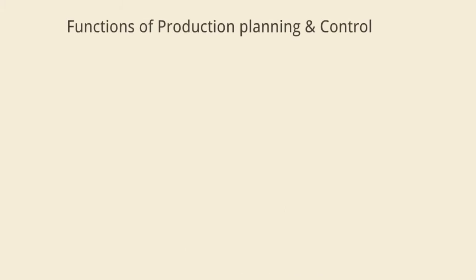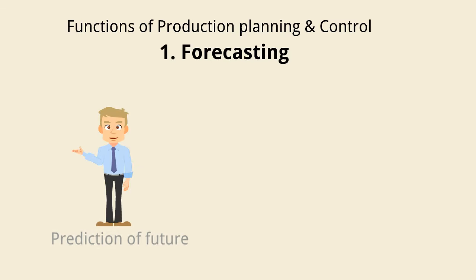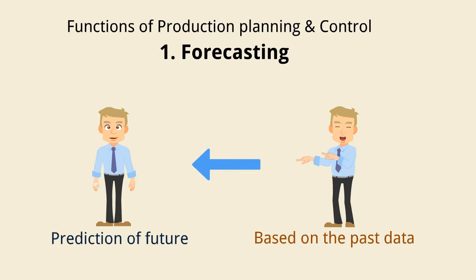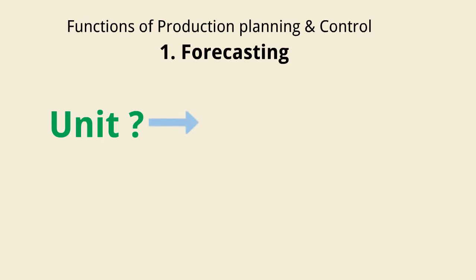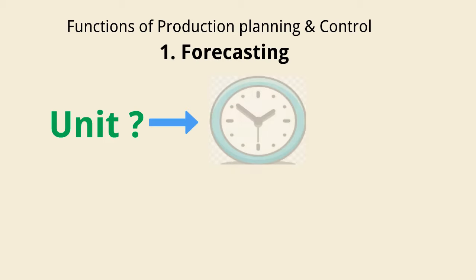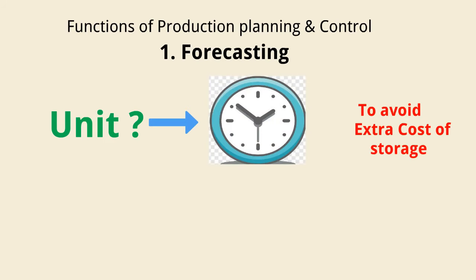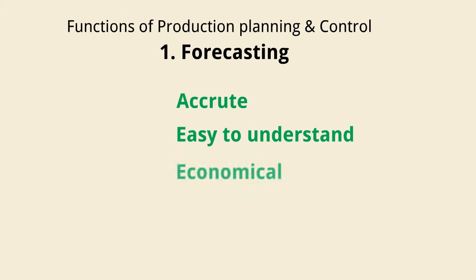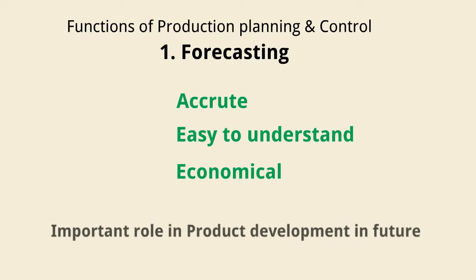A production planning and control system consists of many functions. Various functions are: 1. Forecasting. Forecasting is the process of making predictions of future data based on the past data by analysis of trends. Forecasting decides how many units to produce during a specific time period to avoid the extra cost of storage and reduces the chance of making outdated products. So a sales forecast should be accurate, easy to understand, and economical at the same time. Forecasting plays an important role in product development in the future.